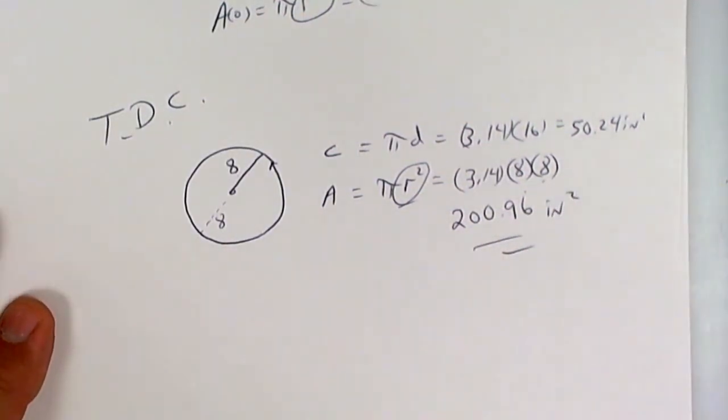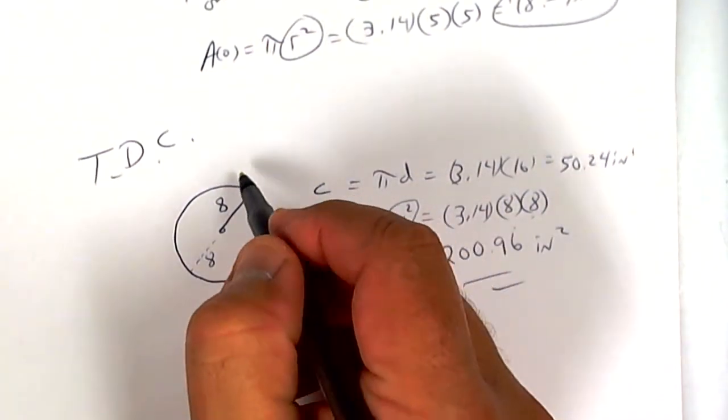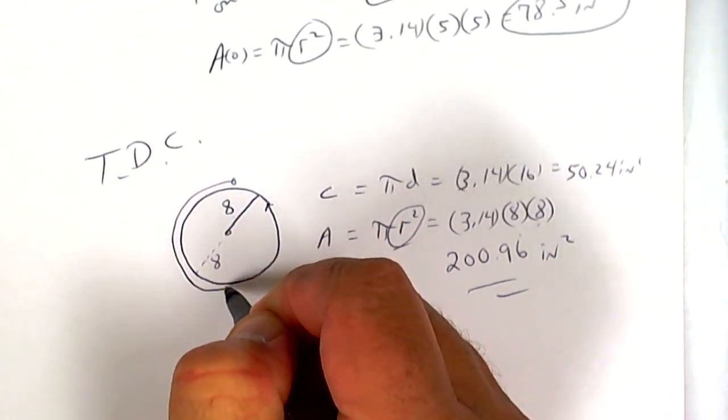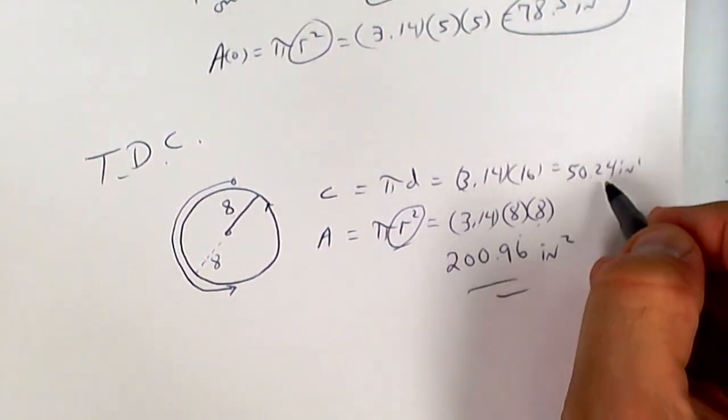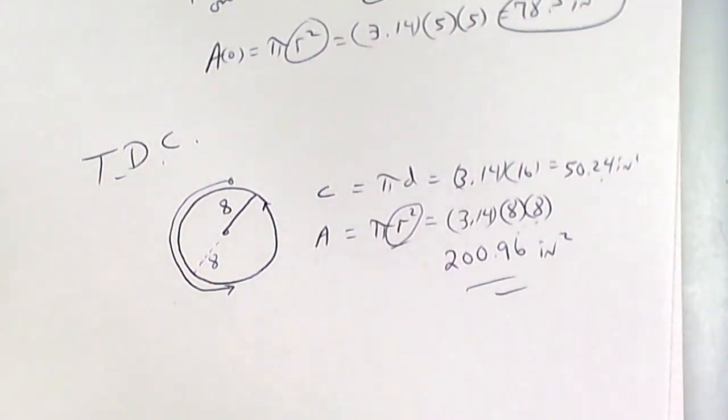This is area, so it would be square inches. That's how you do circumference and area. Now, let's say you only go halfway. Let's say your intention is to go all the way, but you're jogging and you only make it halfway. If you only go halfway, then you divide by 2.